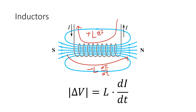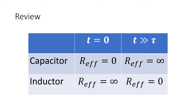Just to review: at t equals zero, the capacitor behaves like a resistanceless wire and current flows through like normal, as if it's not even there. But the inductor, because it produces a back EMF, blocks current entirely at t=0. Then for a long time after — when t is much greater than the characteristic time constant — it flips: the capacitor has no more charges to push out so no current flows, while the inductor, now used to the change in current, behaves like a resistanceless wire.